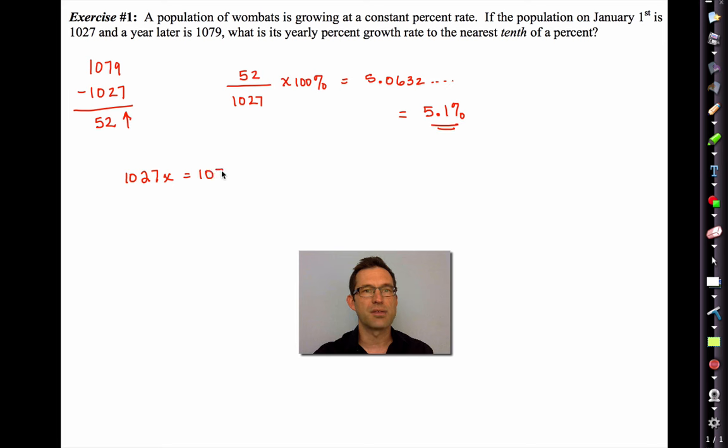what we find is that ends up being 5.0632, et cetera, which is 5.1%. Some people like doing it this way. They set up a little equation. They say, well, I'm going to take 1027 and multiply it by x and get 1079. Then they divide and get 1.050632, et cetera. And then they look at this and go, 5.1%.